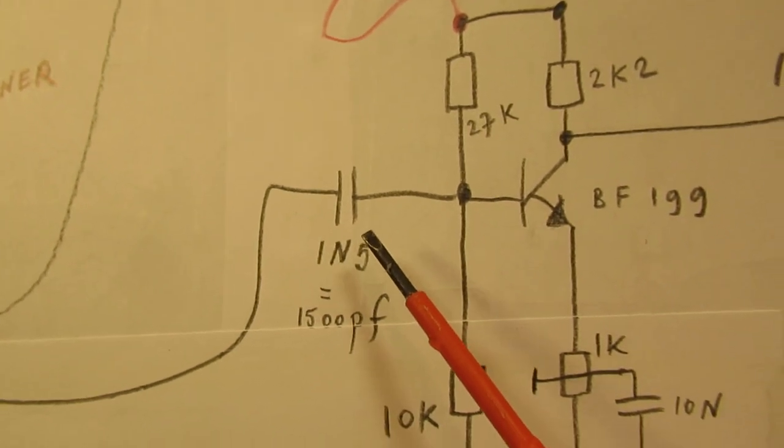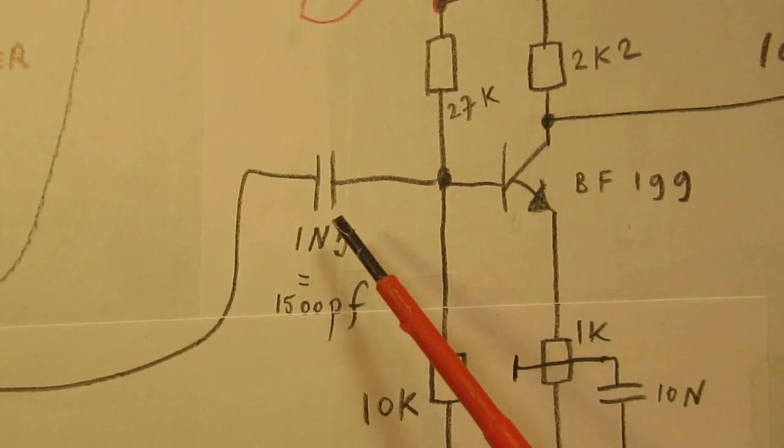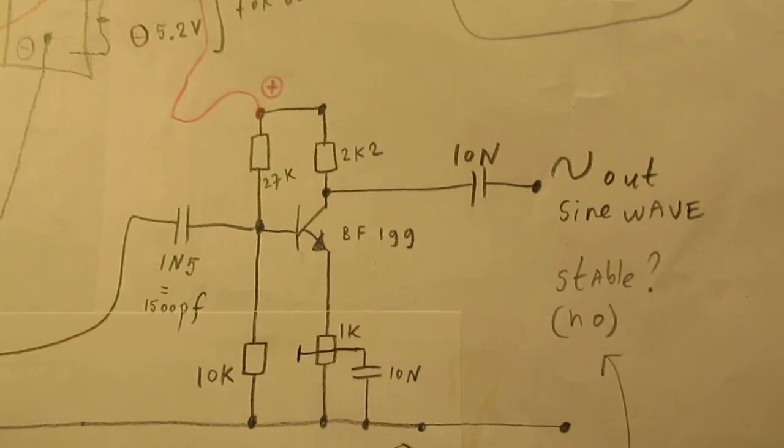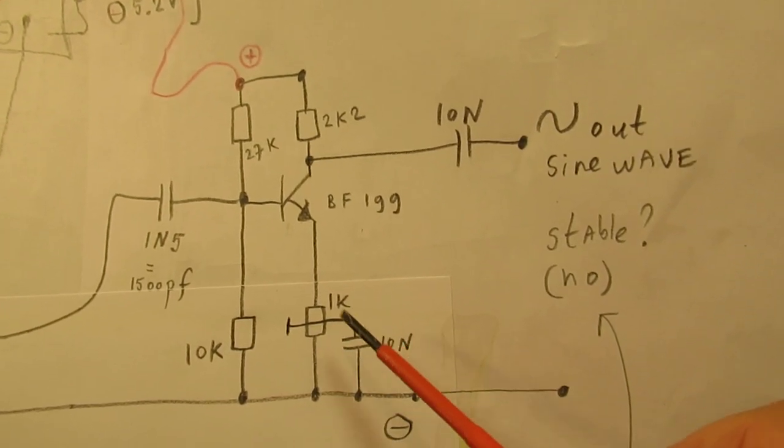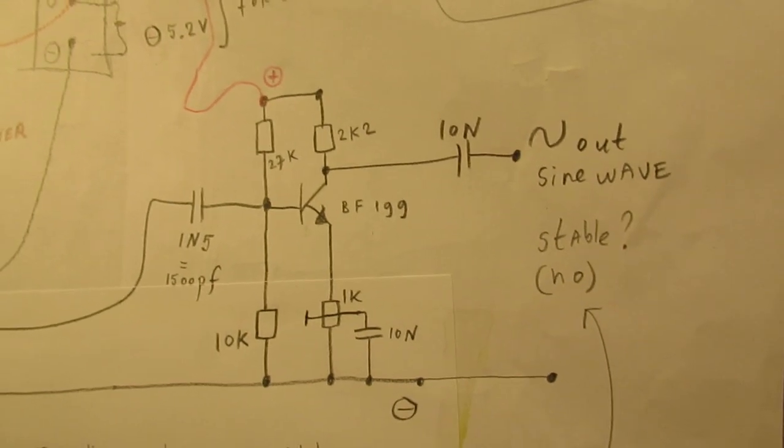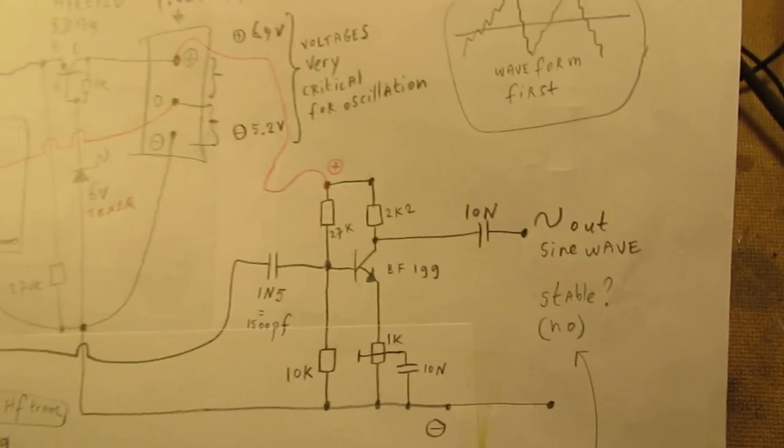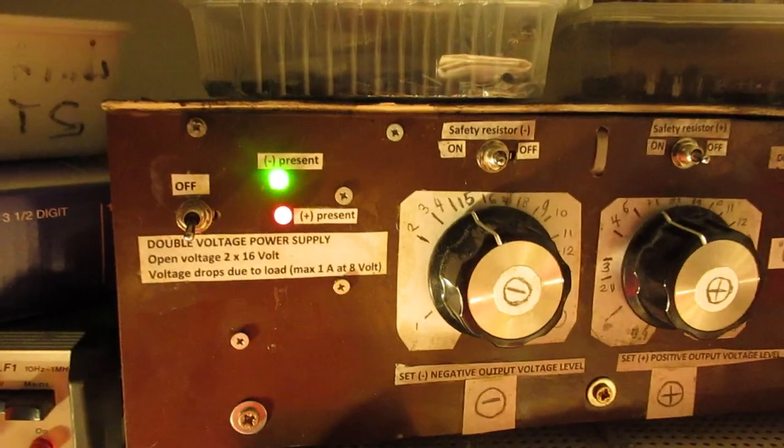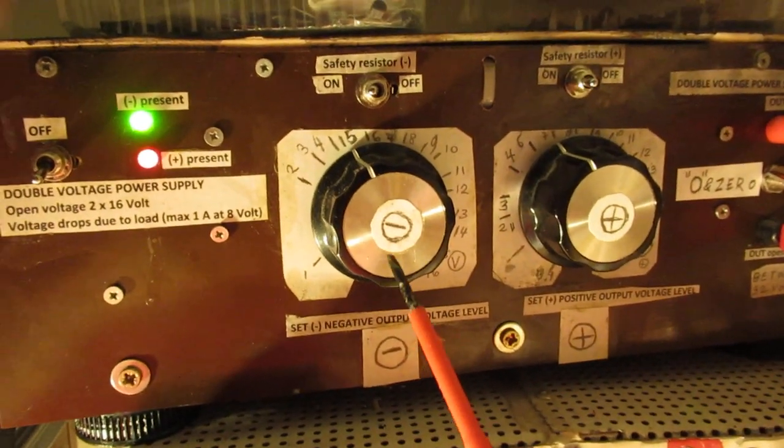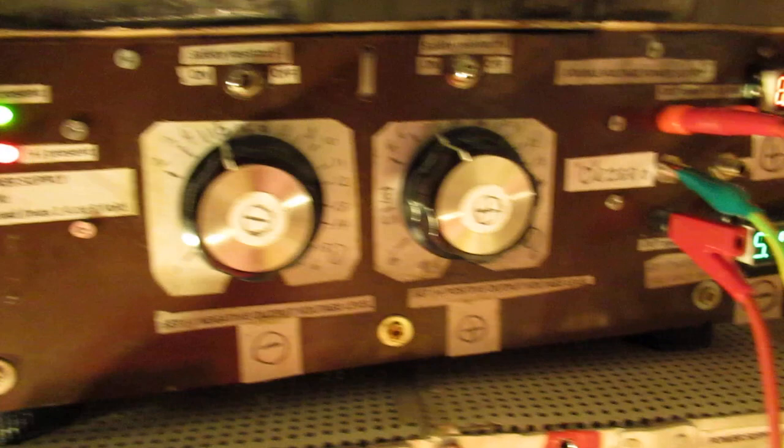And then with a 1N5 capacitor into the base of the amplifier. And with this potentiometer we can set the amplification. I have to say that the voltages to drive this circuit are very critical. I use here a negative voltage and a positive voltage.